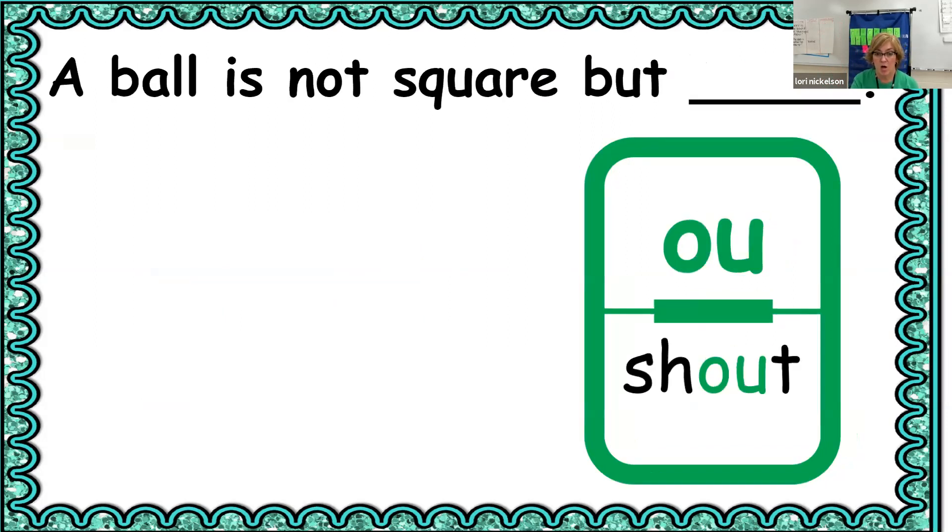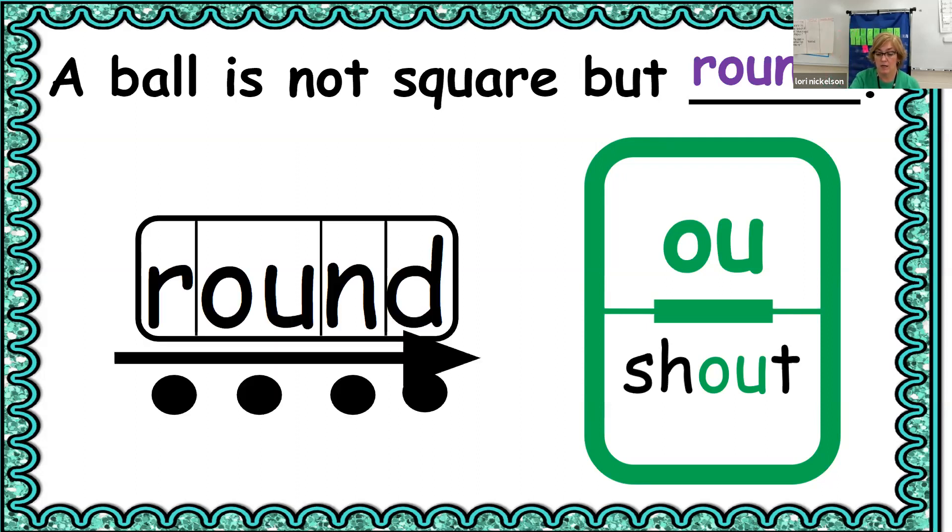A ball is not square, but round. Good. It's got the ow sound, like in shout. Round. So how many sounds are in round? R-O-U-N-D. How many sounds is that? Four sounds. R-O-U-N-D. Great job.